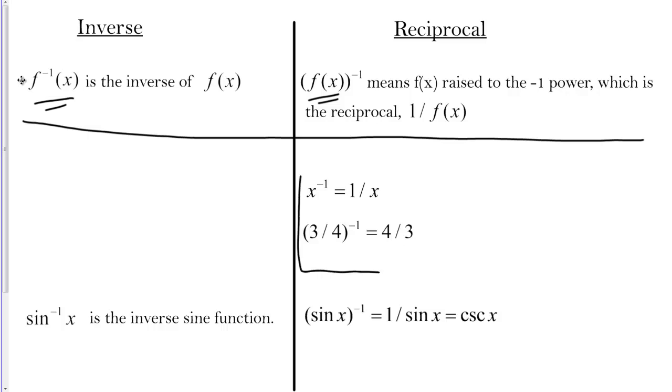In this section right here that I've written, when you're just dealing with a variable by itself or just dealing with a number by itself, the negative one is always just going to represent the reciprocal. It's only when you're thinking about functions that there's that little bit of ambivalence you have to figure out. If you're just dealing with variables like X to the negative one, that's one over X, that's just the reciprocal.